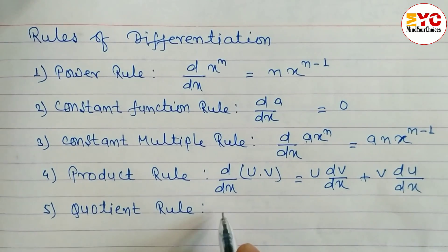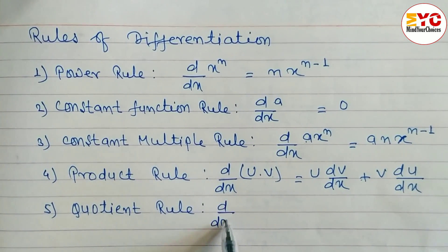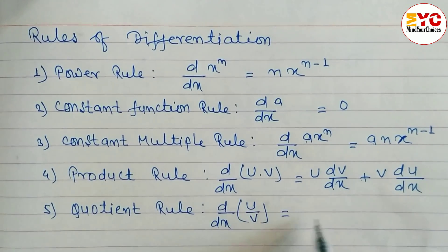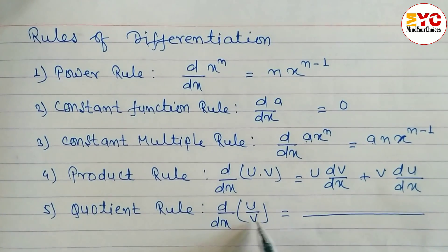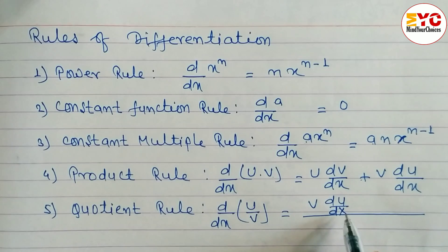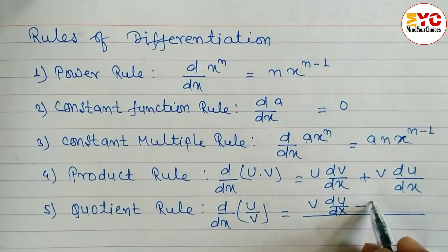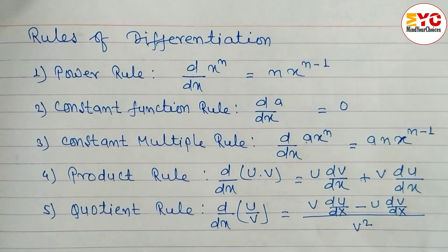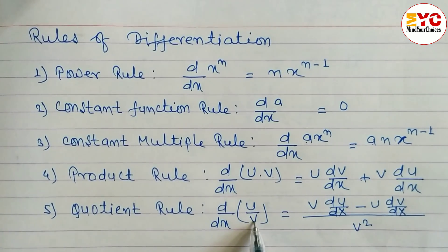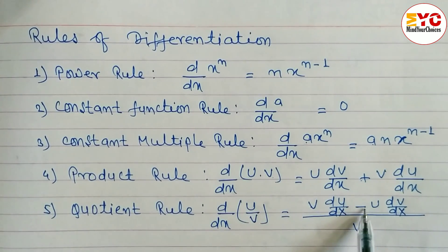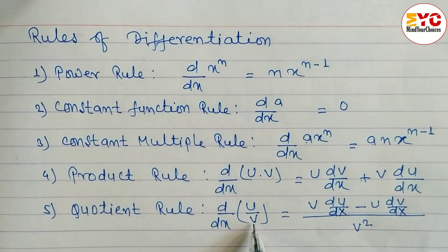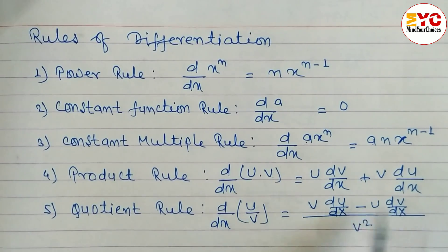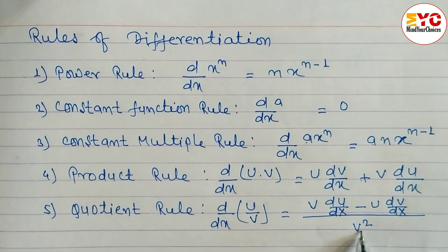The quotient rule: d/dx of u/v equals (v times du/dx minus u times dv/dx) divided by v squared. Write v times the derivative of the numerator u, minus u times the derivative of the denominator v, all divided by v squared.